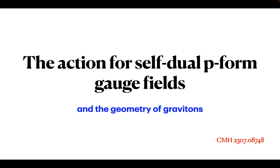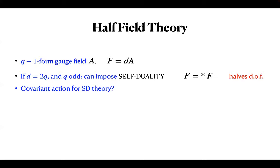I'm going to be talking about some work from last year about self-dual p-form actions. I've been working for some time on double field theory, and what I'm going to talk about could be thought of as going in the opposite direction—what you might call half-field theory. The basic idea is very familiar: if you work with a q-1 form gauge field with q-form field strength F, if q is half the dimension, and if q is odd, you can impose the self-duality constraint that F equals the Hodge dual of F, and that halves the degrees of freedom.